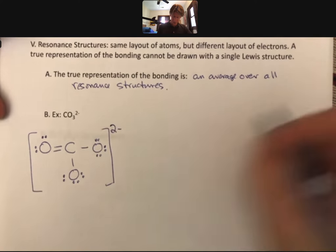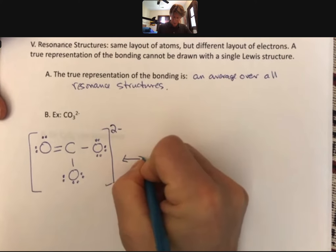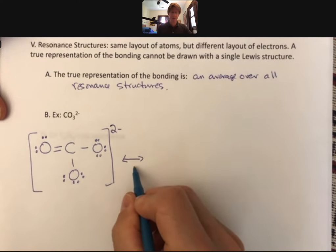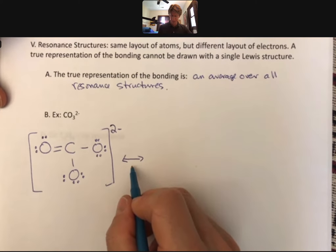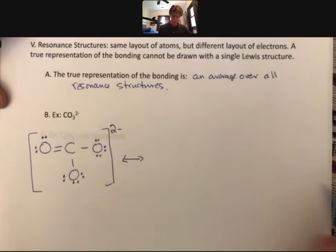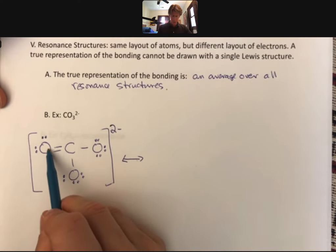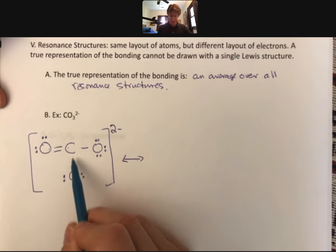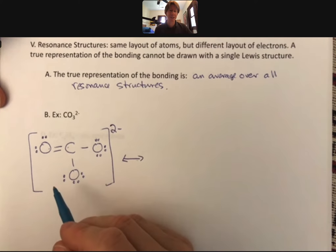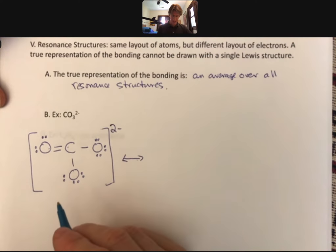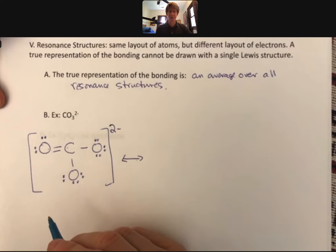Now, how does it become a resonance structure? Well, I'll draw what's called resonance arrows, although you don't have to, but that's typically what these are. Single head on both ends. Now, we put the double bond here. We could have put the double bond in either of these two other places, and that's what you do when you draw resonance structures. You draw all possible equivalent positions of the double bond.